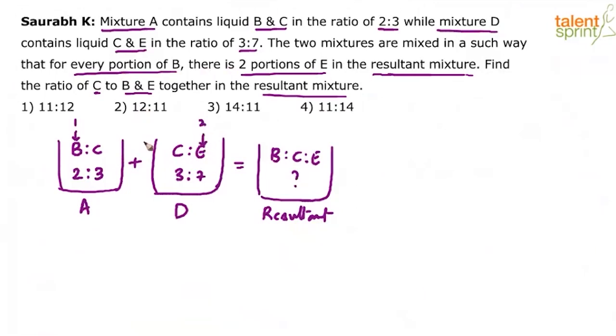Now, for us to be able to solve this question easily, first of all, you need to balance the number of parts of B with respect to the number of parts of E. Only then we can say for taking one of B, we are taking two of E. You are able to follow. Like in the current situation, I cannot say one part of B is taken and then two parts of E are taken.